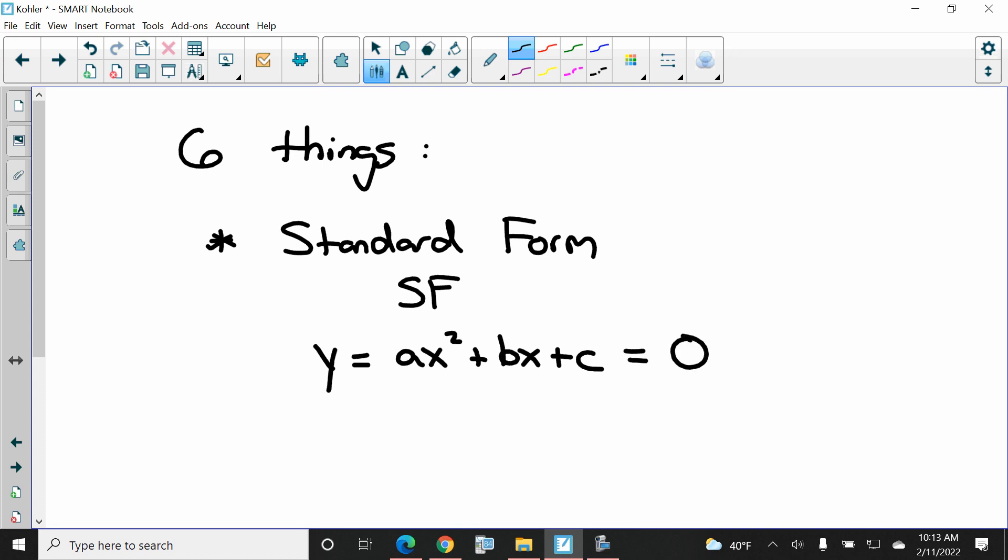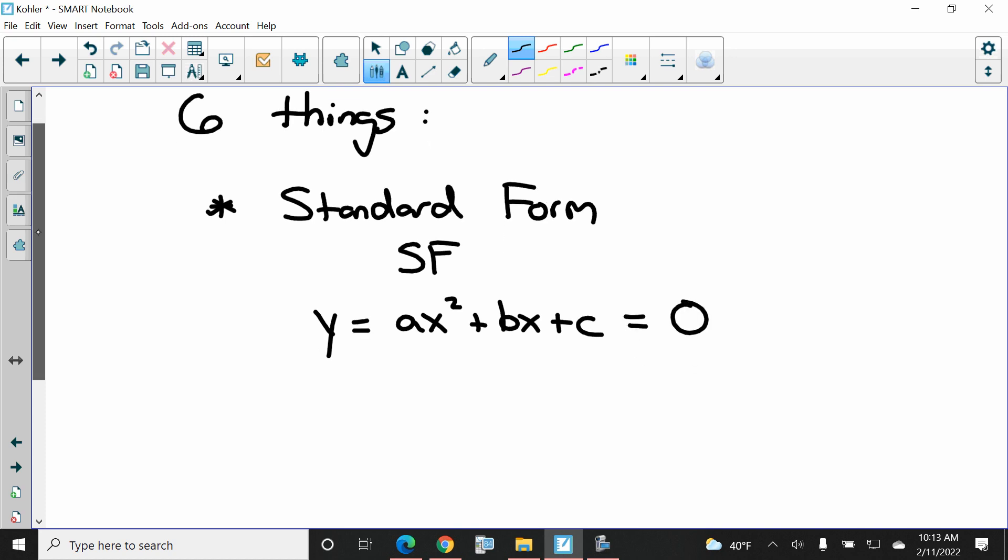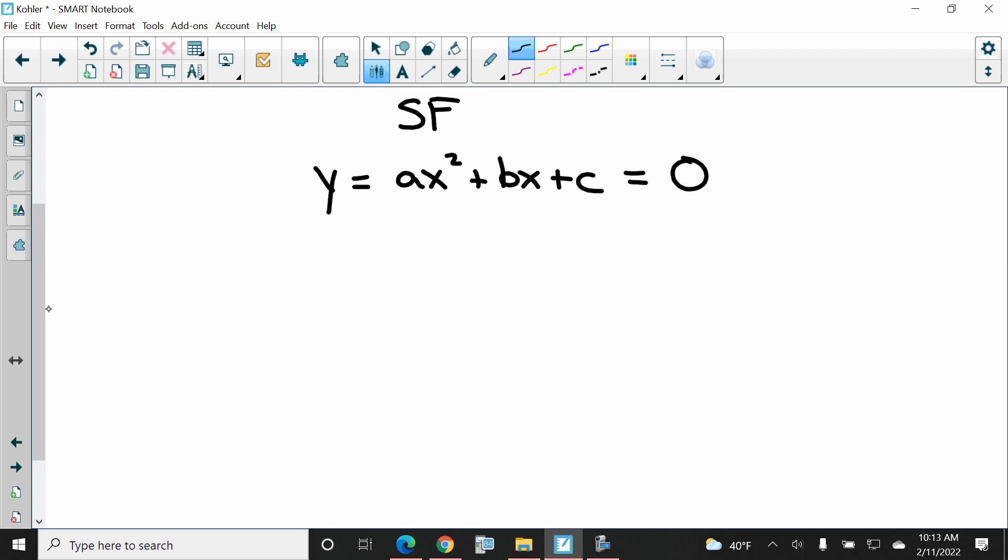Or equals zero if we're solving. I want to see it in vertex form. Vertex form, VF for short. This is, if we're graphing, y equals a(x minus h) squared plus k. And if we're solving, equal to zero.